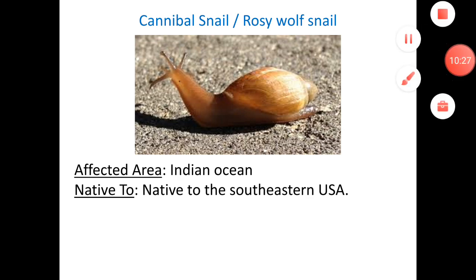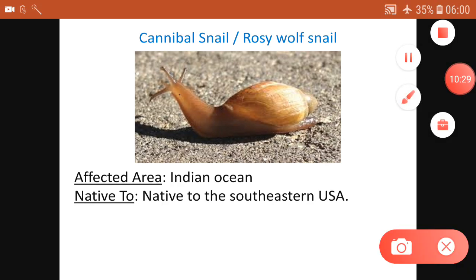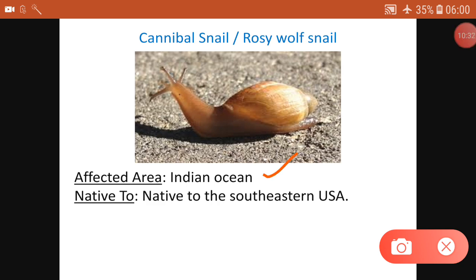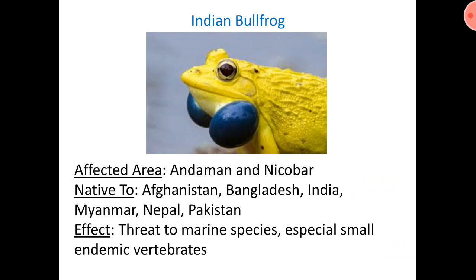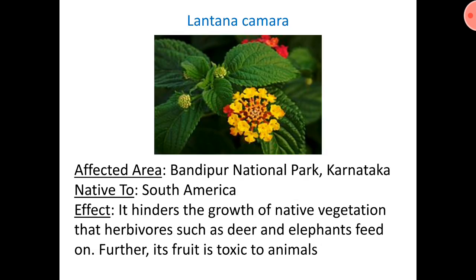The Cannibal Snail, or Rosy Wolf Snail, is affecting the Indian Ocean region and is native to the southeastern USA. The Indian Bullfrog is native to Afghanistan, Bangladesh, India, Myanmar, Nepal, and Pakistan, but poses a threat to marine species and small endemic vertebrates.